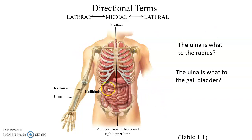Here we have the gallbladder and the ulna. The gallbladder is medial compared to the ulna. Here's the ulna and here's the radius. The ulna is medial to the radius.